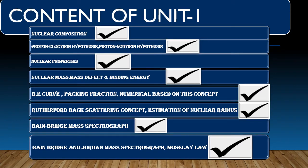Now I am discussing with you what we have covered in Unit 1. Let's review the questions likely to be made in this unit. Nuclear composition: you have two hypotheses that have been studied. Number 1: proton-electron hypothesis. Number 2: proton-neutron hypothesis.